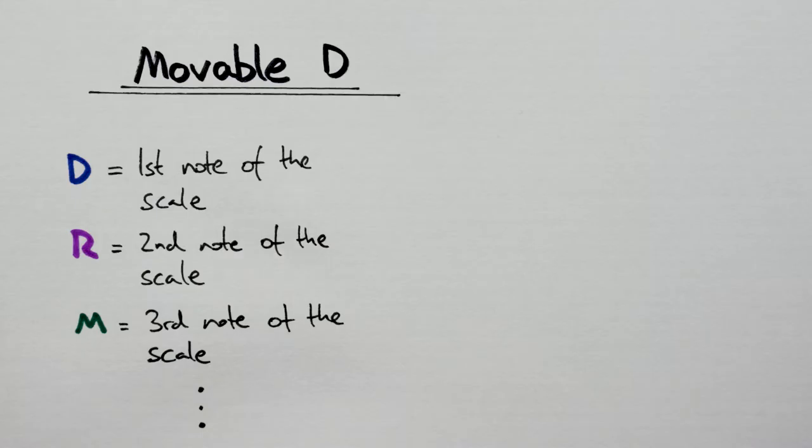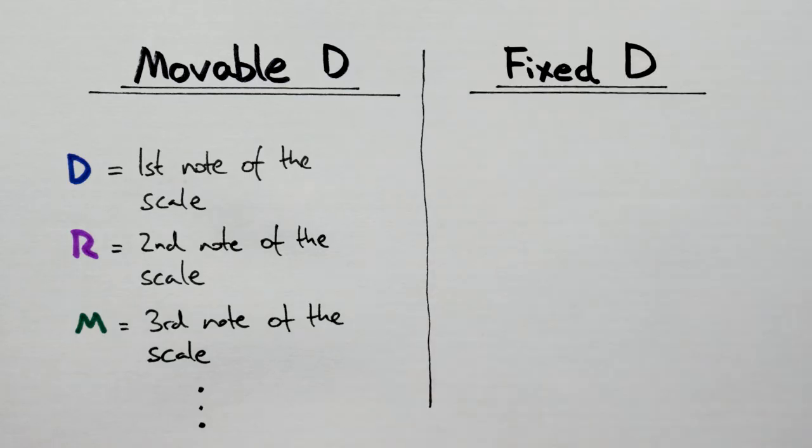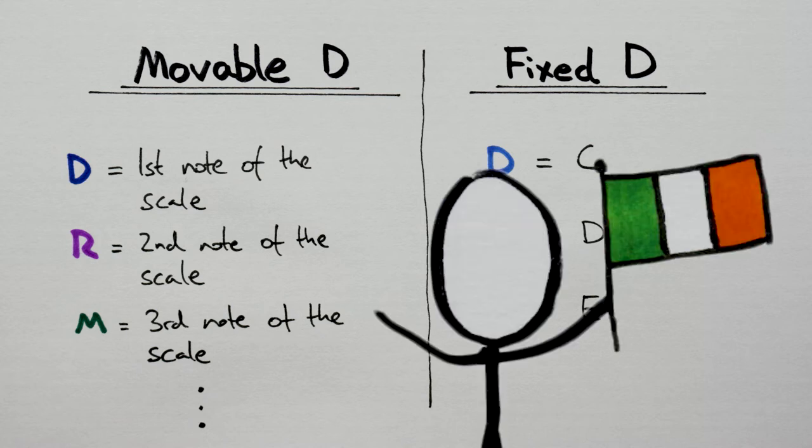If this sounds weird to you, chances are you live in a country that uses the other system: Fixed Do. Fixed Do, like the name implies, fixes Do to C, Re to D, Mi to E and so on, regardless of scale. Both systems have their pros and cons, but we're gonna stick with moveable Do just because that's the system we use here in Ireland.